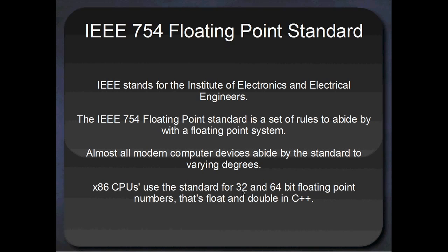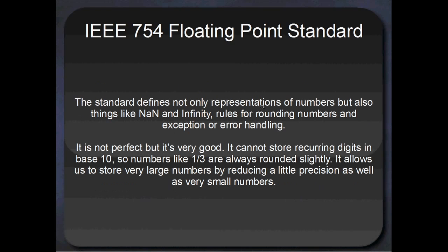Just about every single modern computing device abides by these standards to some degree. X86 CPUs use the standard for 32 and 64 bit floating point numbers, and those are called float or double in C++. The standard defines not only representations of numbers in binary, but also other things like NaN, which means not a number, maybe you've done some invalid operation like zero divided by zero. It's also got bit patterns that represent infinity and negative infinity, rules for rounding numbers and rules for how to handle exceptions when different illegal things happen.